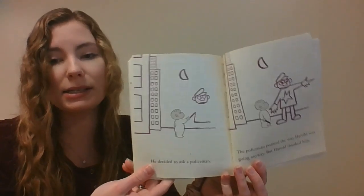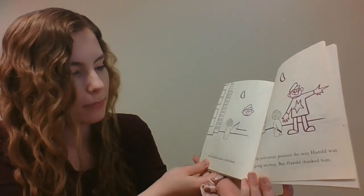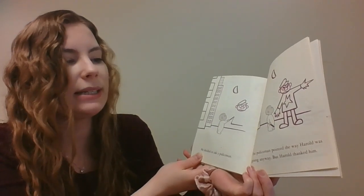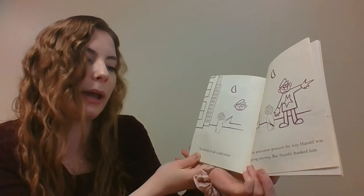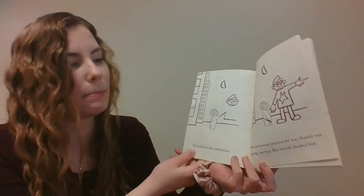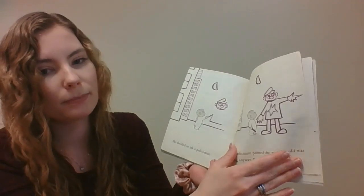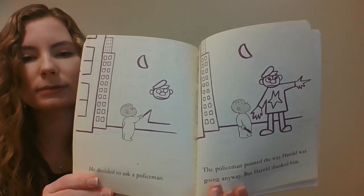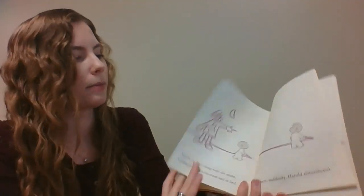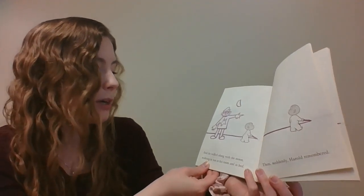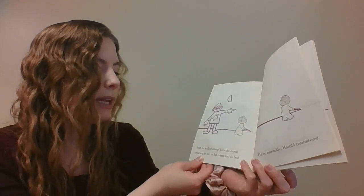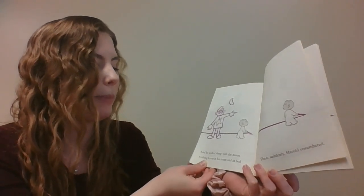He decided to ask a policeman. The policeman pointed the way Harold was going anyway, but Harold thanked him. And he walked along with the moon, wishing he was in his room and in bed.